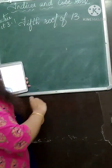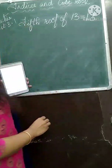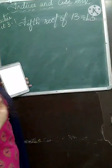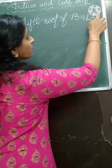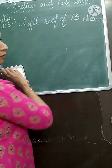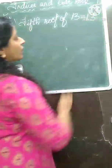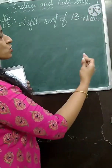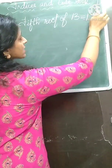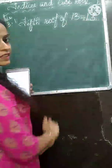The first question is fifth root of 13. You will write it as 13 raised to 1 upon 5. You will not write it as 13 raised to 5 — that is the fifth power of 13. But here it is fifth root, so you write 1 upon 5. The 5 is coming as the denominator.